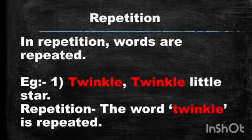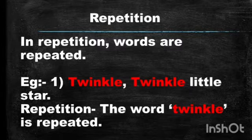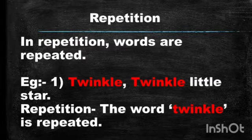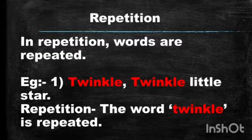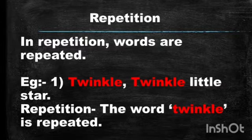The next figure of speech we will study is repetition. In repetition, children, words are repeated. Example number one: 'Twinkle, twinkle, little star. Twinkle, twinkle, little star.' The given sentence is repetition. Why repetition, children? Because the word 'twinkle' is repeated. And when there is repetition of a word, the given figure of speech is repetition.